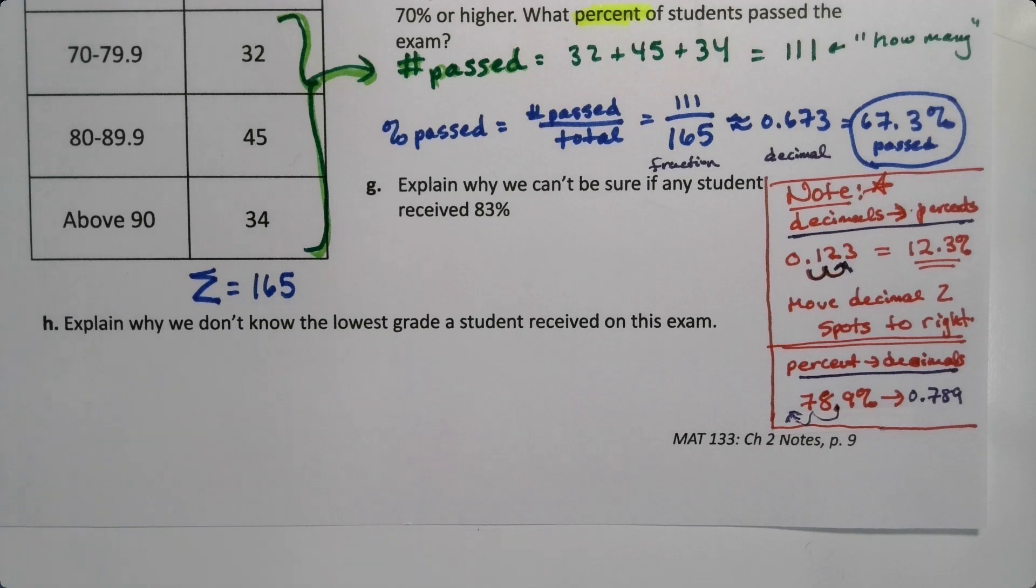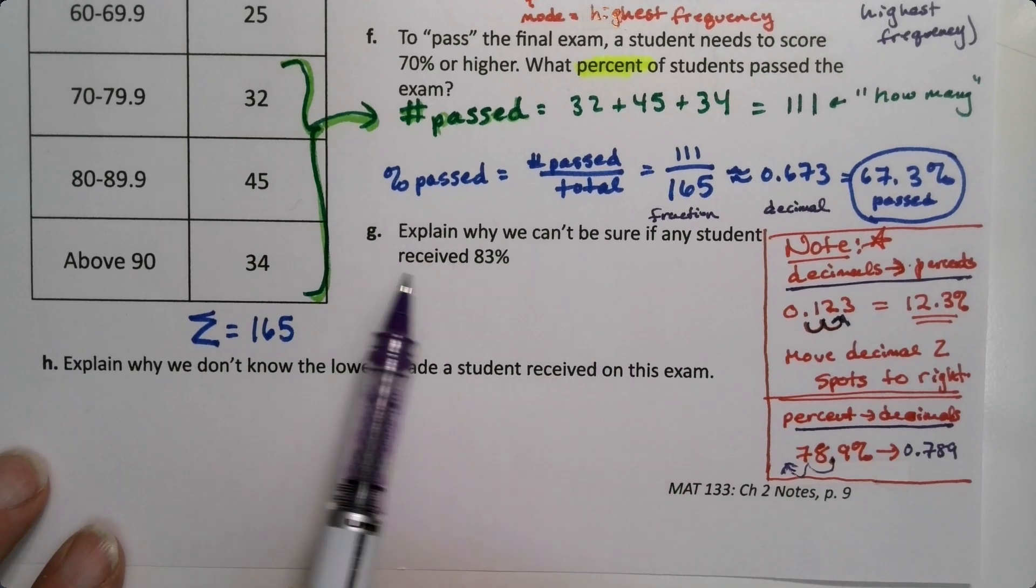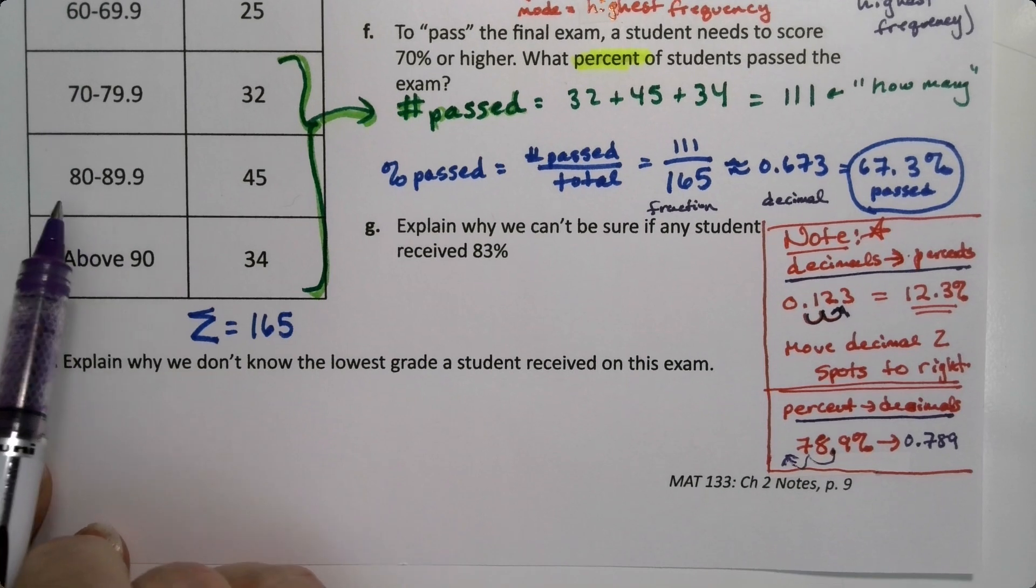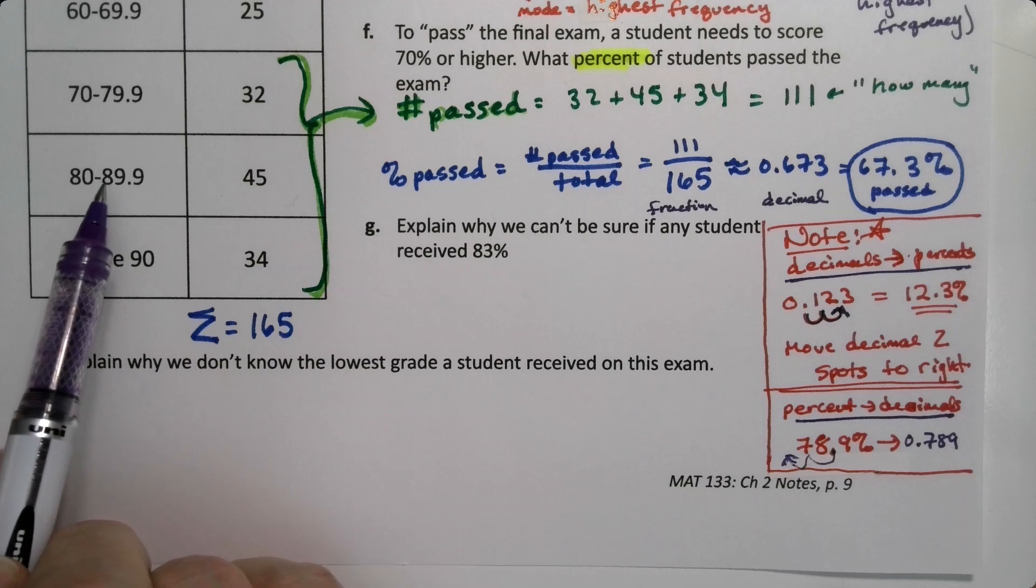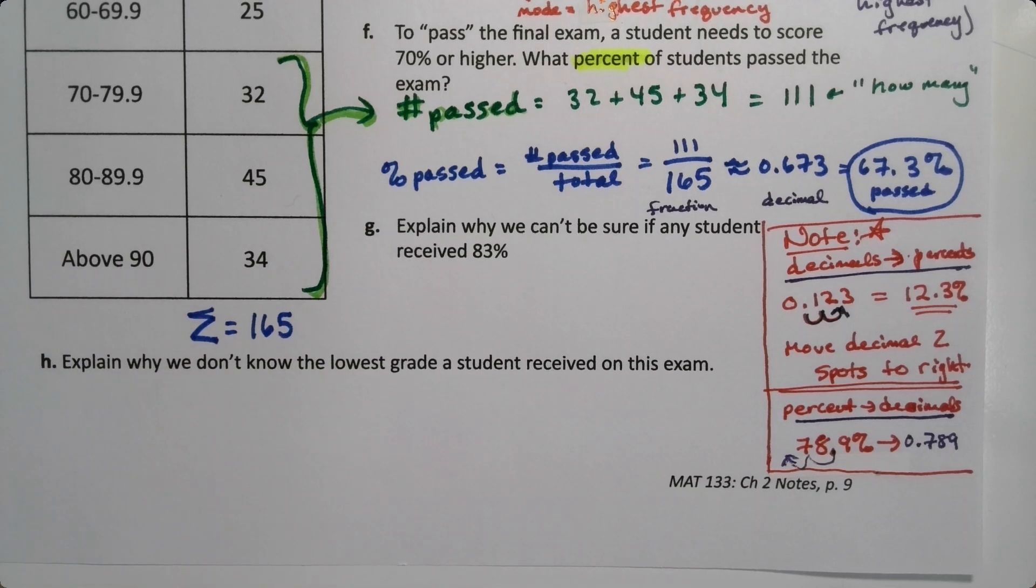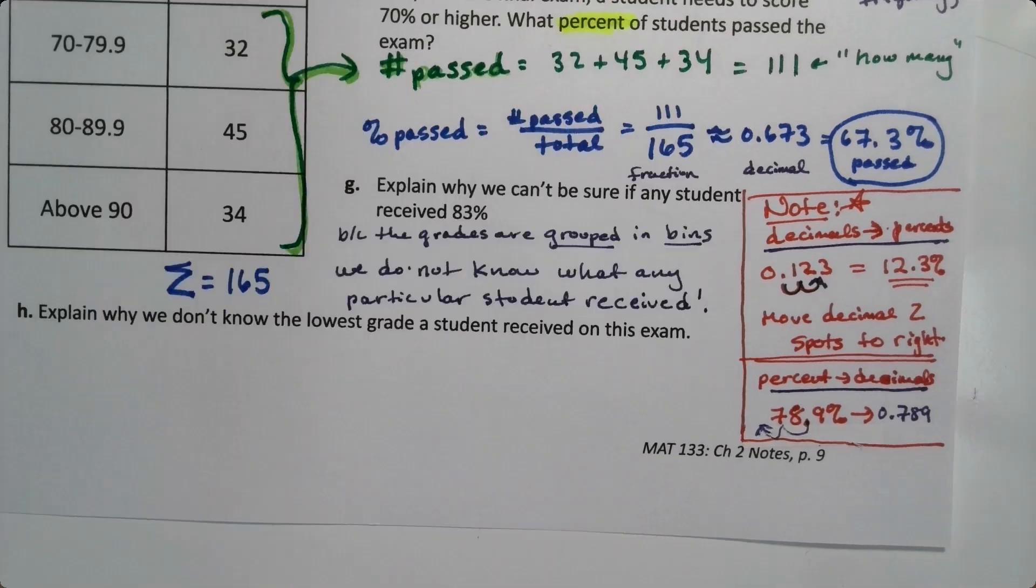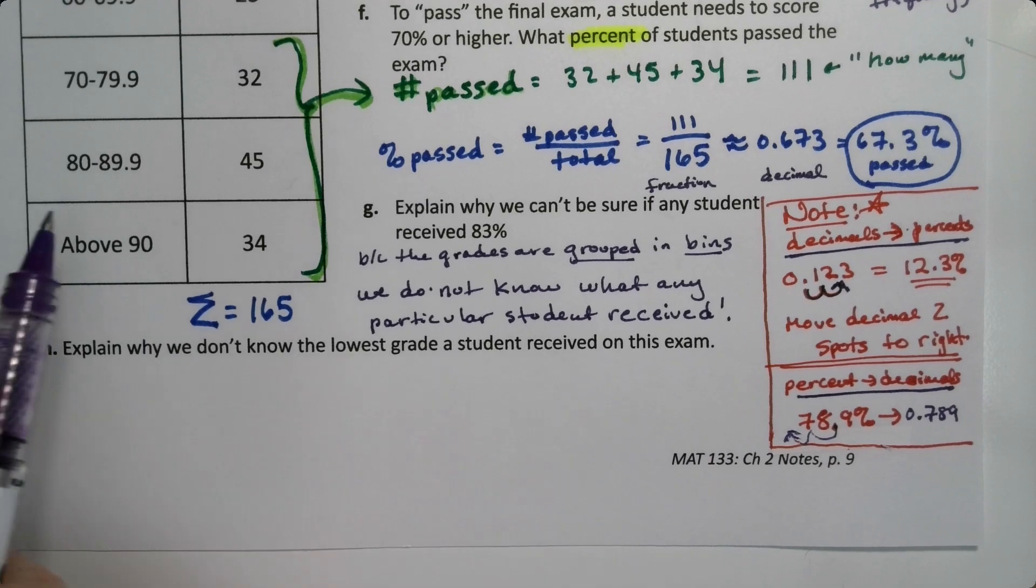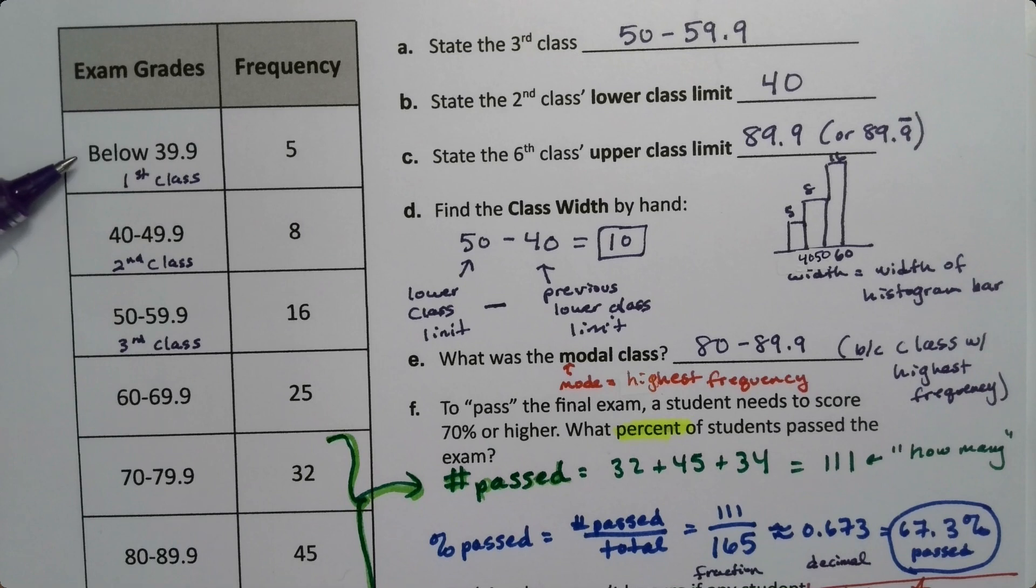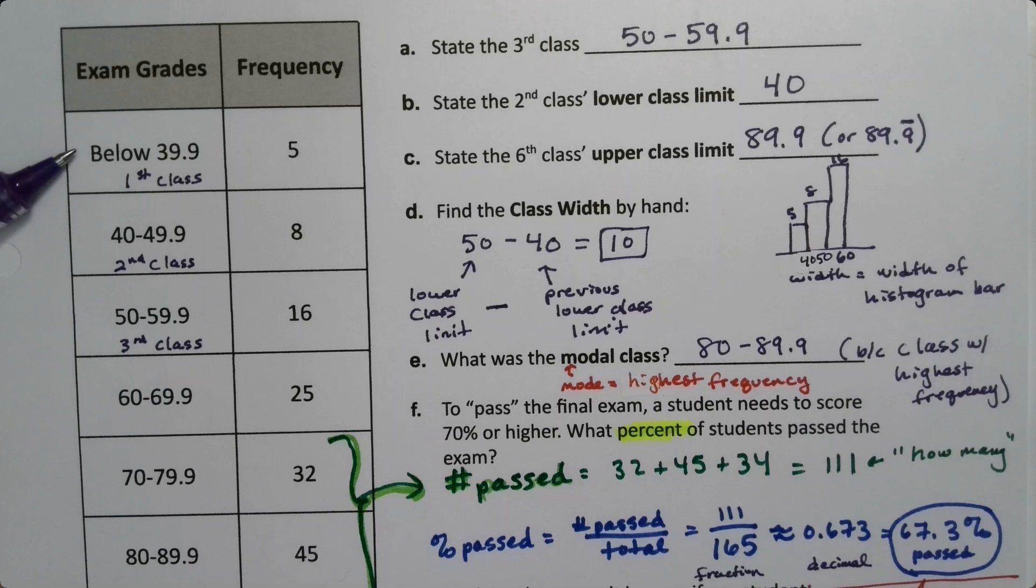The last two questions are two sides of the same coin. Explain why we can't be sure if any student received an 83%. So 83% is in the middle of this bin, in the middle of this class. And that's exactly the problem. Because all the data are binned, we don't know what any individual got. Because the data are grouped into bins, those bins are generic, they're groups. We don't know what any particular student got. We just don't have that information. It's given to us in this table, not for individuals, but for groups.